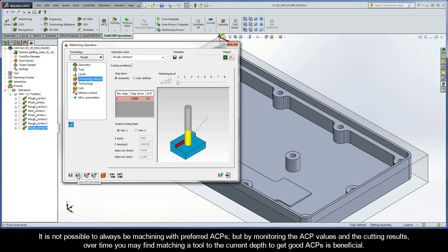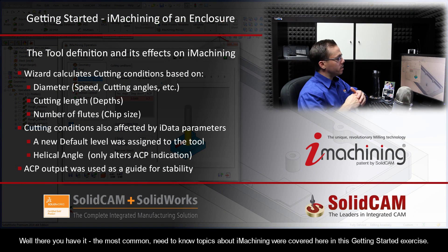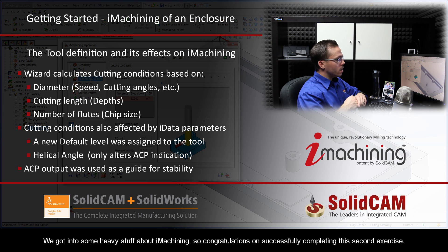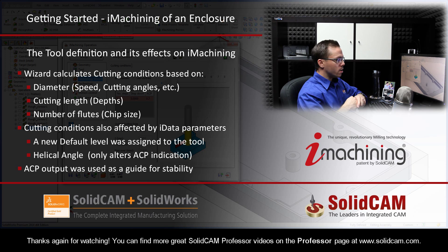Now, it's just not possible to always be machining with preferred ACPs, but by monitoring the ACP values and the cutting results, over time you may find that matching a tool to the current depth to get good ACPs is beneficial. Well, there you have it. The most common need-to-know topics about iMachining were covered here in this Getting Started exercise. These topics included things like adding a new machine and material to the iMachining database, an in-depth look at the wizard using the iREST technology type, and the tool definition in conjunction with ACPs. We got into some pretty heavy stuff about iMachining, so congratulations on successfully completing your second exercise. And thanks again for watching. You can find more great SolidCam Professor videos on the Professor page at www.SolidCam.com.